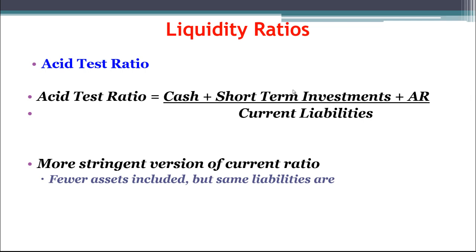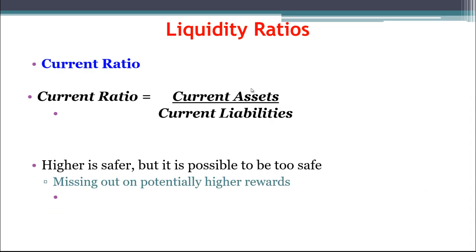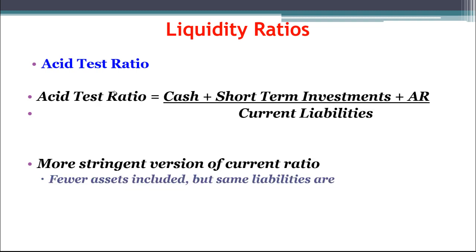There are even further variants of this ratio that get closer and closer to worst-case. You basically keep carving out more and more current assets — take away accounts receivable, take away investments — and then you're left with just the cash ratio: cash divided by current liabilities. As rough rules of thumb, 2.0 has been seen as a safe current ratio, meaning you have twice as many current assets as needed to pay current liabilities. And 1.0 has been seen as a good acid-test ratio — with those assets only, you have at least enough to pay current liabilities.